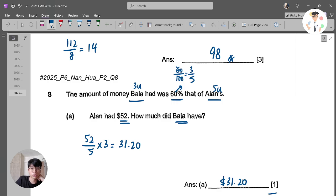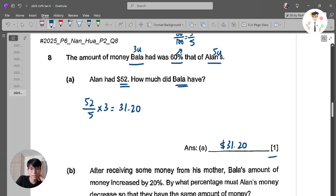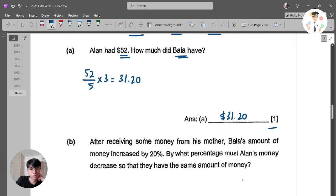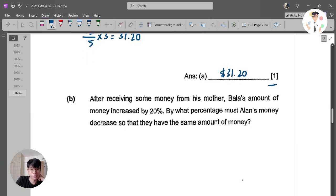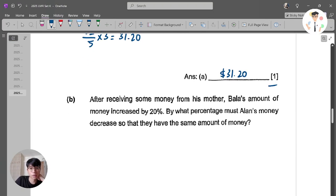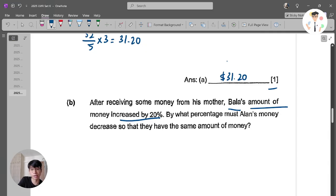How much did Bala have? So 52 divided by 5, which is 5 units here, and times 3. That is $31.20. That is the amount that Bala had. Nothing tricky here. But the interesting part actually moved to be part B.